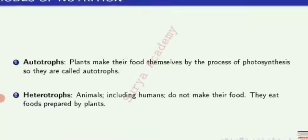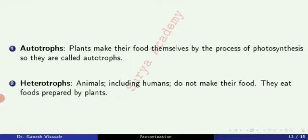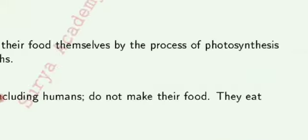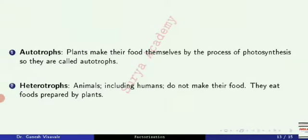So now let us see what are autotrophs. Autotrophs kone hoote hai? Basically they are the plants. Plants make their food themselves by the process of photosynthesis and they are called as autotrophs. Photosynthesis ke process through plants joe aapna khud ka khana bana te hai, therefore they are called as autotrophs. Yeh they do not depend on any other organism for their food. These are called as autotrophs.